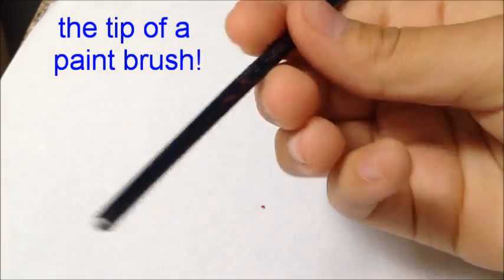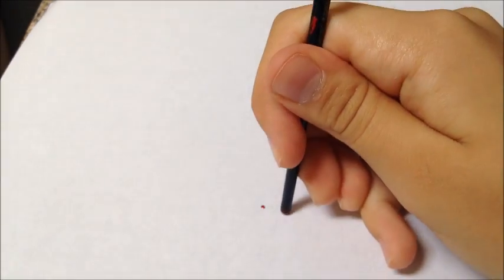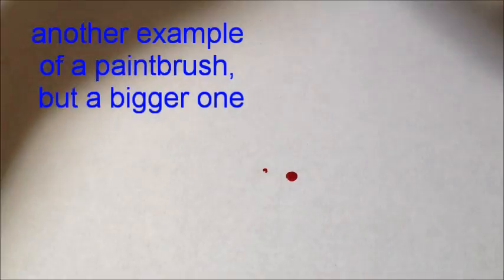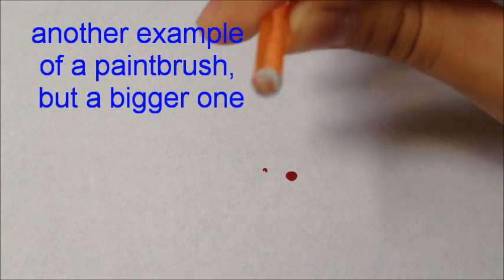The tip of a paintbrush. This is what the dot of a paintbrush looks like. This is just another example of a paintbrush, but a bigger one.